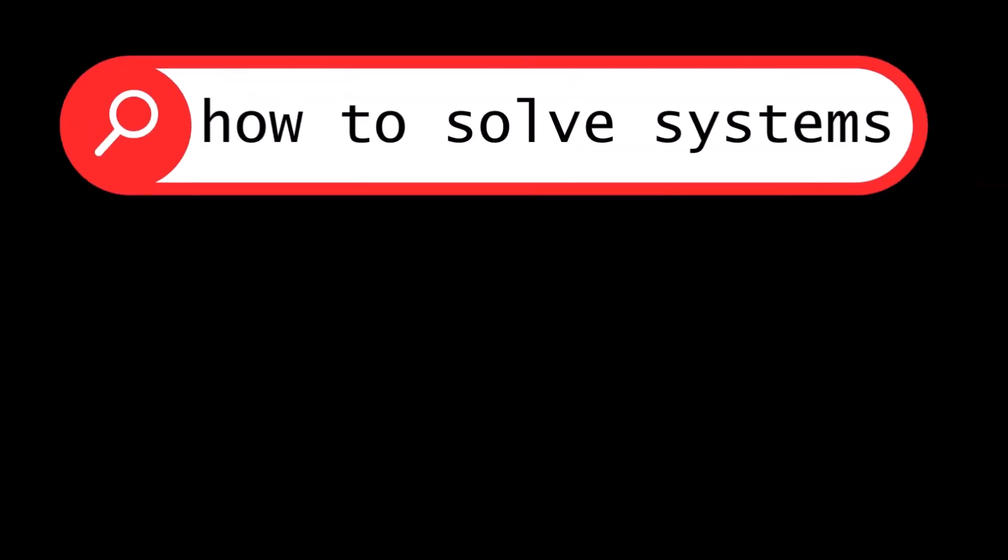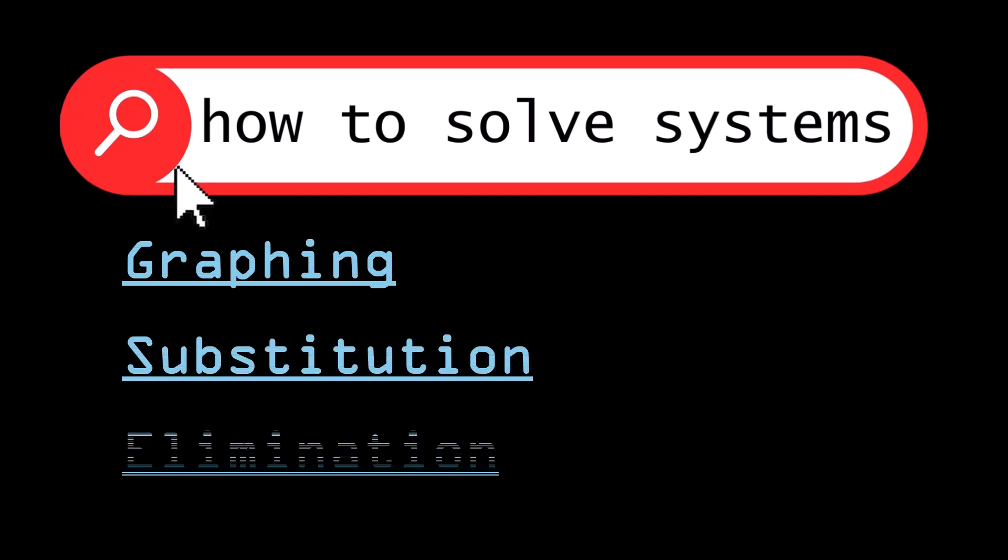Hey, this is Tammy and I do Math for Coffee, and today I'm going to do a very fast review on how to solve a system of equations. There are three ways to do it: graphing, elimination, and substitution.